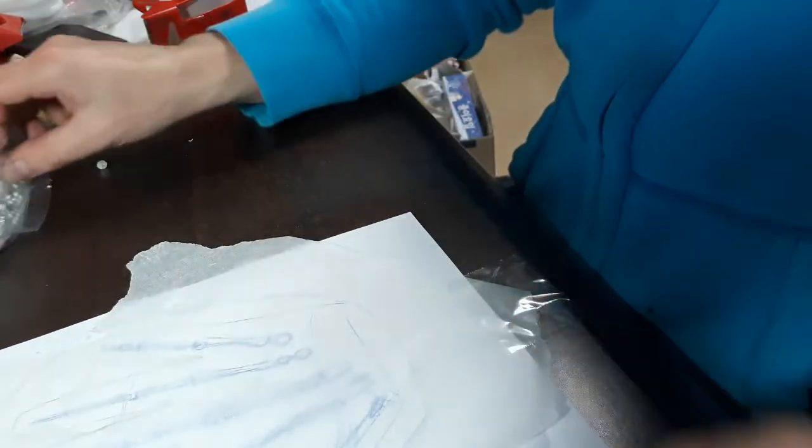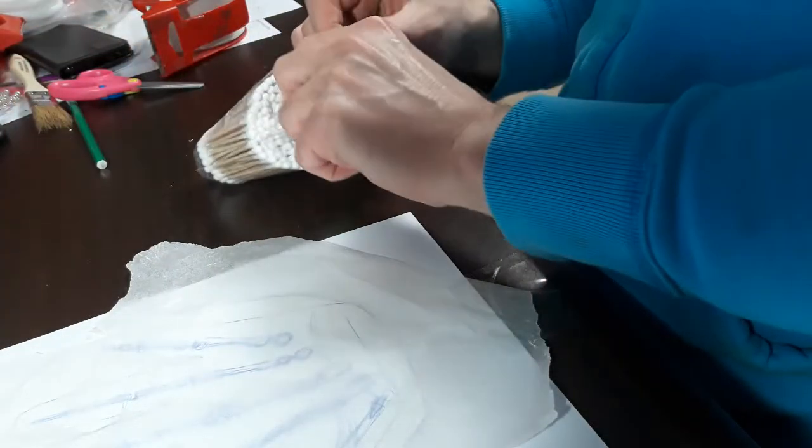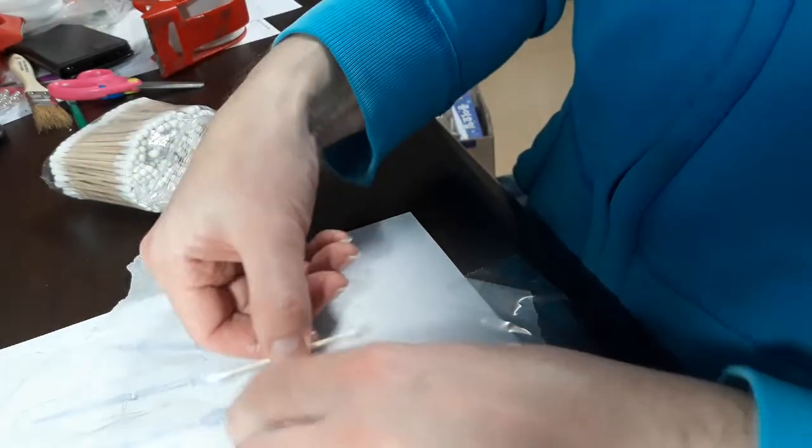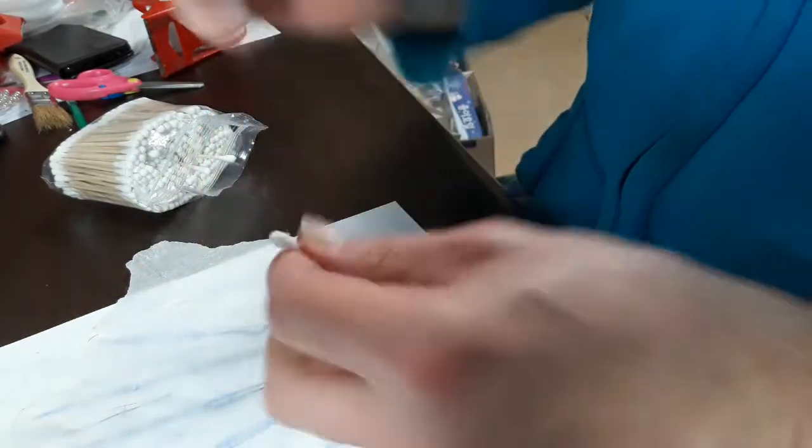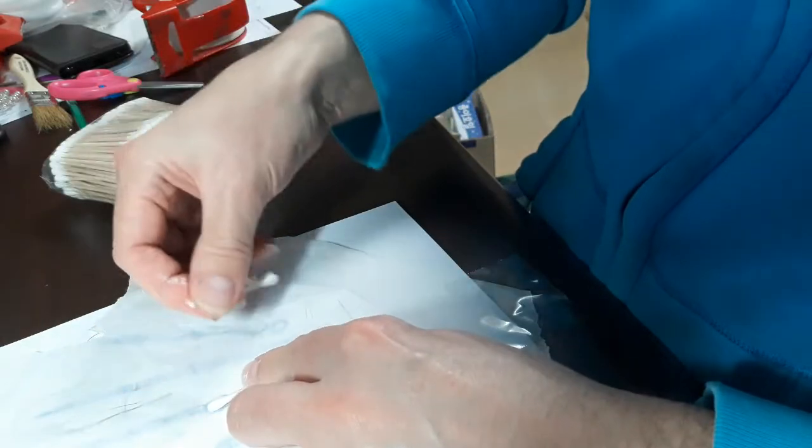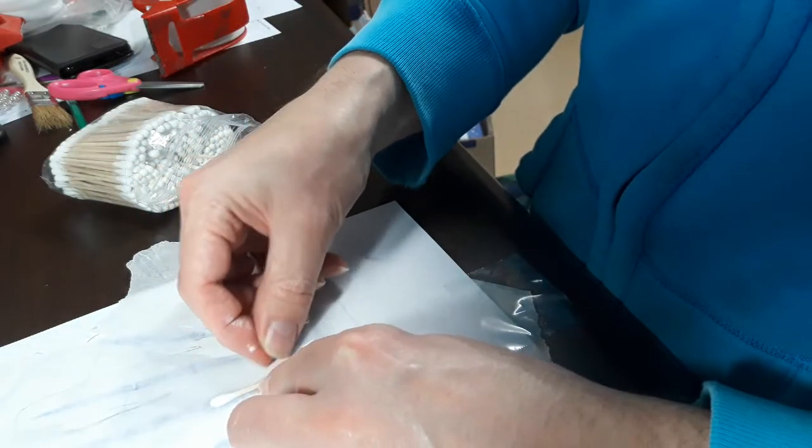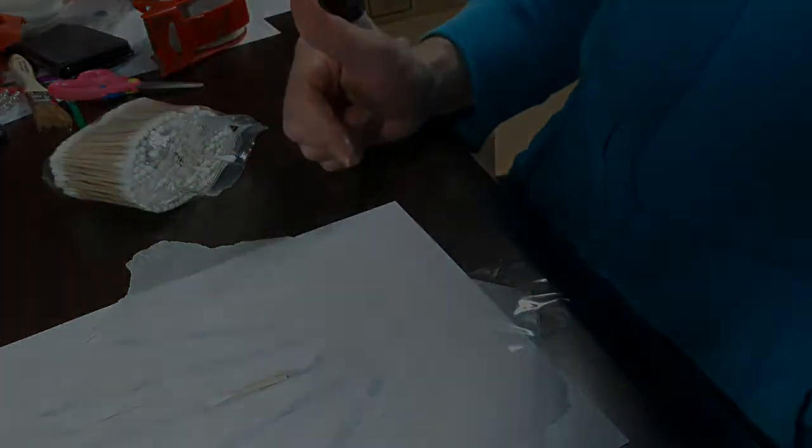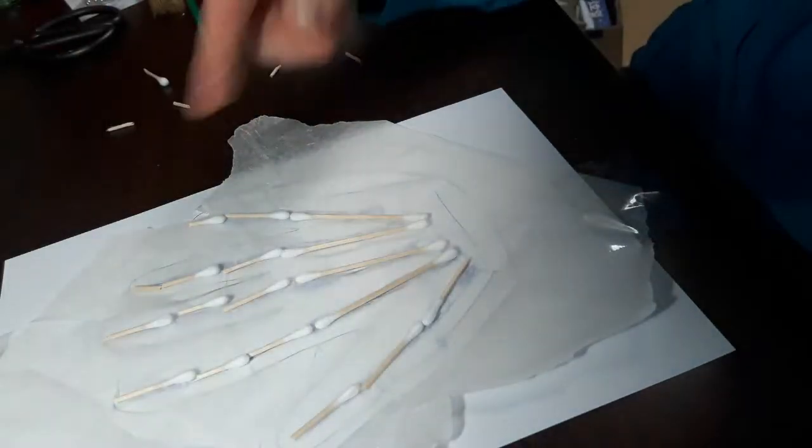Once you get this mapped out, you're going to use some Q-tips. Measuring the size of the bone, you can break them into size. Get them all put in there. I'm going to show you what that looks like when they're all done. Once you get all your bones in place,